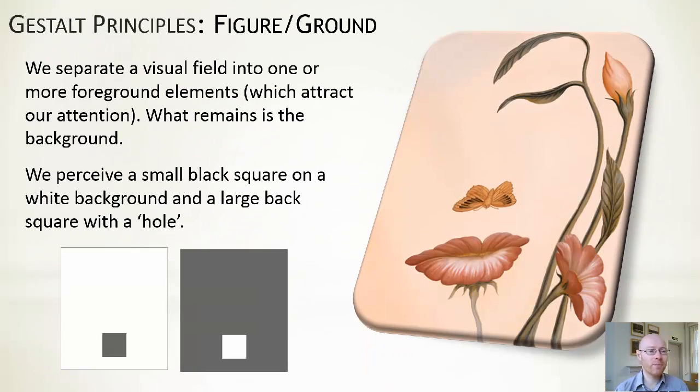Figure-ground is another one. When we look at something, we generally are driven to have the notion of foreground and background. Foreground being the objects that we perceive as being important within that particular scene. That's generally what attracts our attention, and everything else becomes the background. You've got an example down here. In terms of looking at the different colored squares, depending on how it's presented, in some cases we may see that as if it's a foreground element with a hole cut out or a background element with a smaller square in front of it.